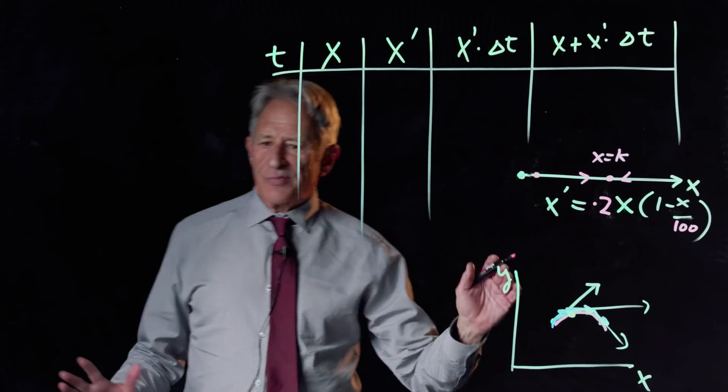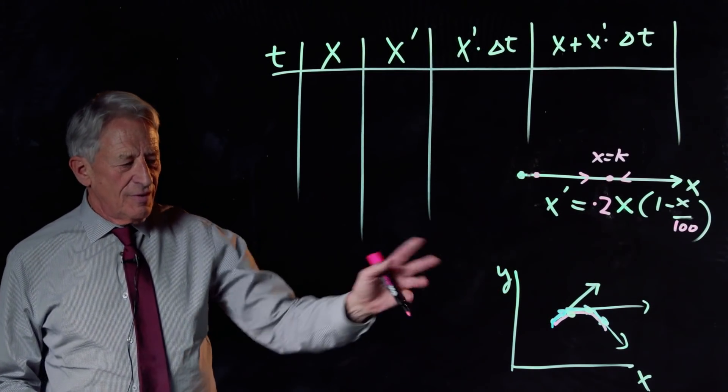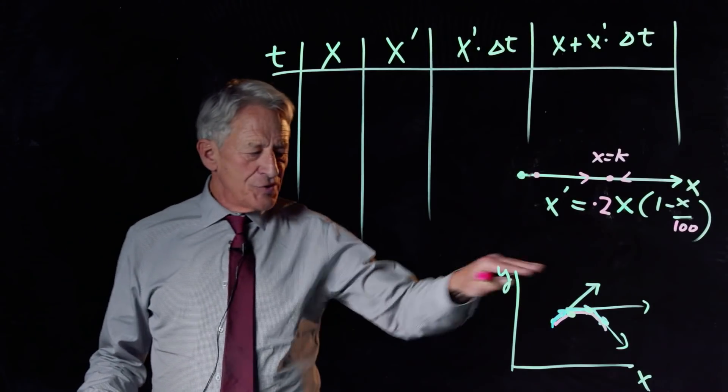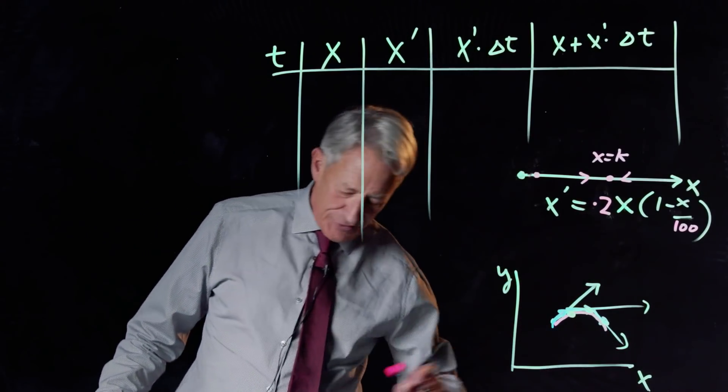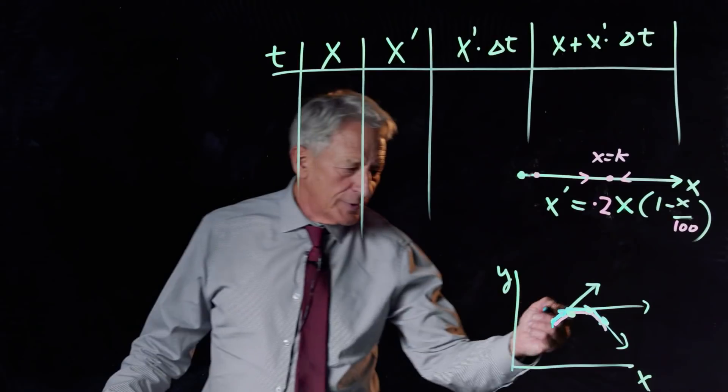So, this is Euler's method. And we're going to use it to approximate this trajectory, the blue broken line.